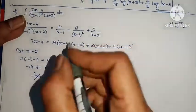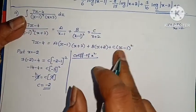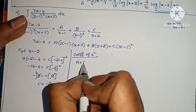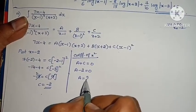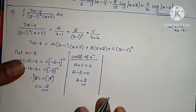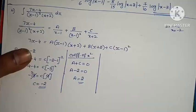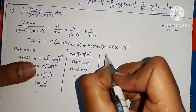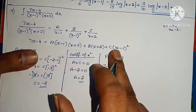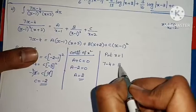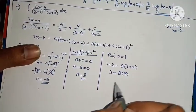Comparing coefficients of x squared: A plus C equals 0. Since C equals minus 2, A minus 2 equals 0, so A equals 2. Therefore A equals 2, B equals 1, C equals minus 2.